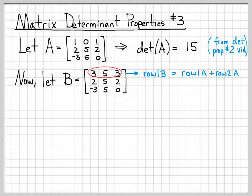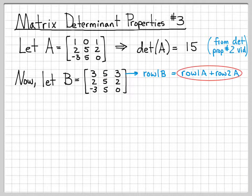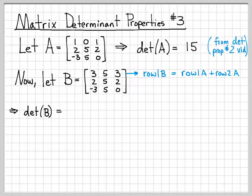The only difference is one of the rows has been changed, and it's been changed as a linear combination of the previous rows. So what is the determinant of B? So let's actually go ahead and work through this. Let's actually just compute it, and we'll see what happens, and then we'll discuss the more general property.